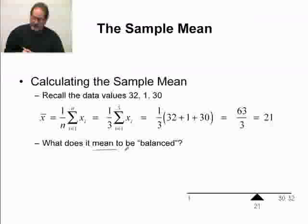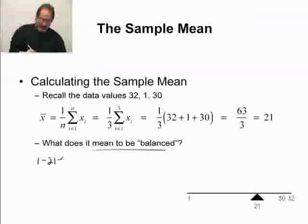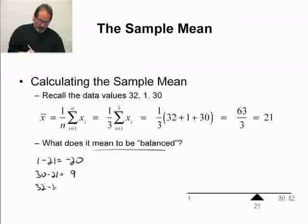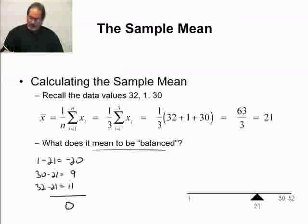Now, again, what does it mean to be balanced? Well, if I take a look at these values, see, 21 is not even in my dataset. If I take 1, subtract from it 21, what do I get? A negative 20. If I take 30, subtract from it 21, I get 9. If I take 32, subtract from it 21, I get 11. If I add these up, I get 0. So, again, this 21 is the balancing point. It's the balancing point for this data. The balancing point does not have to be a value in your dataset. Okay, that's really basically all there is to calculating the mean.